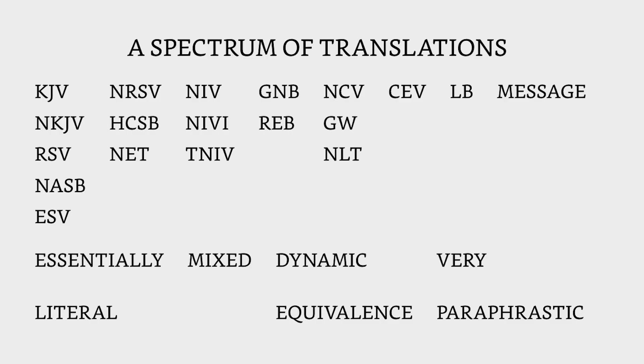Here's a chart showing a spectrum of translations from a book called 'Translating Truth: The Case for Essentially Literal Bible Translation' — a good book if you're interested in this topic. On the essentially literal end you've got the King James, New King James, Revised Standard, New American Standard, ESV, New Revised Standard, Holman Christian Standard Bible (now called the Christian Standard Bible), and the NET Bible.